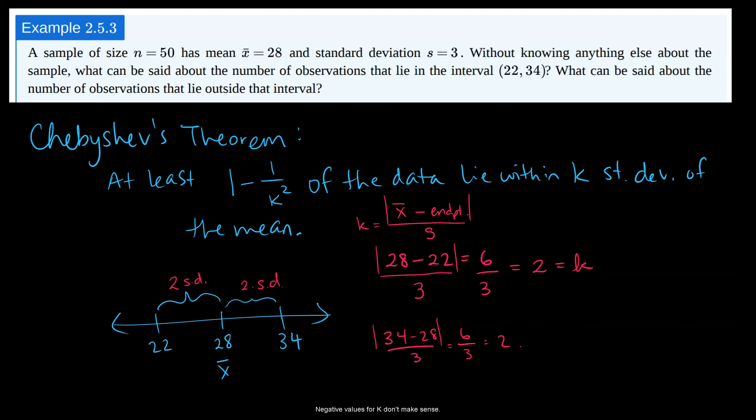Negative values for k don't make sense. In Chebyshev's, k has to be greater than 1. I can't use 1 in there because 1 doesn't work in the formula. It has to be greater than 1. I could use 1.1, but it has to be greater than 1. So I get k equals 2.